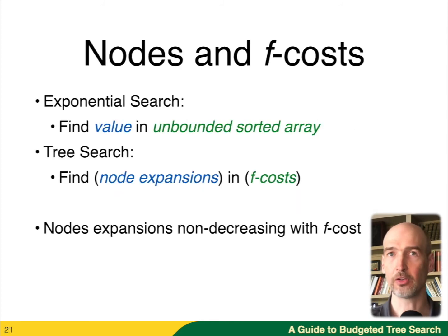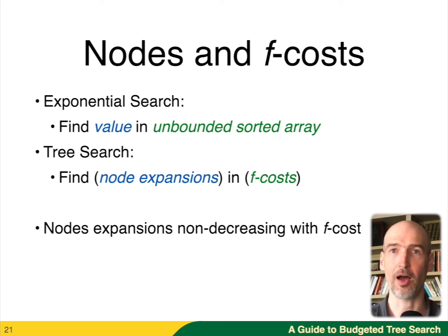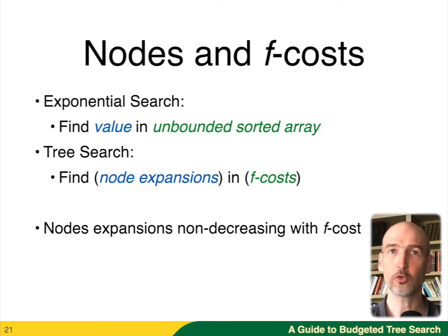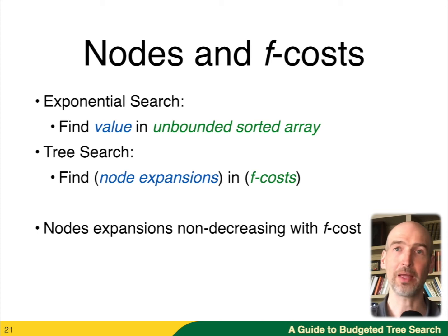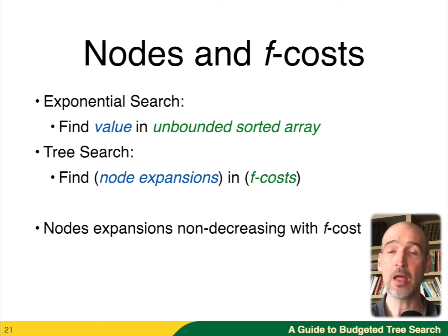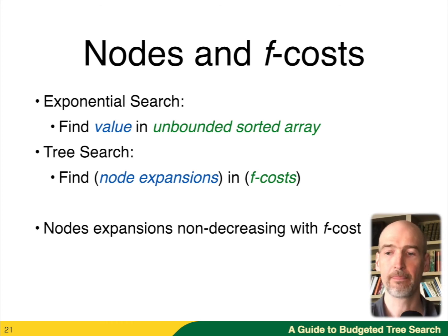There's an equivalency between this algorithm and F costs. F costs are going to be our unbounded sorted array where we have all possible F costs — there's some numerical accuracy to deal with, but that can be handled. The values we're going to be storing are the number of node expansions performed for each F cost. We don't know for a particular F cost how many nodes are expanded, but we can run a bounded depth-first search to find the answer. The important thing is that node expansions, as the F cost increases, are also going to be non-decreasing.